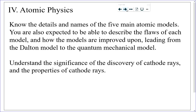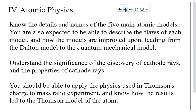When cathode rays were discovered, this was the first main discovery that led us to a more sophisticated model of the atom compared to the Dalton model. It was discovered that the particles in a cathode ray beam were smaller than the smallest atom. Those particles, which we now know are electrons, led to a significant change in our understanding of how matter was put together in the form of atoms. You should be able to look at the physics used in Thomson's charge-to-mass ratio experiment and apply that set of physics principles to any similar situation.